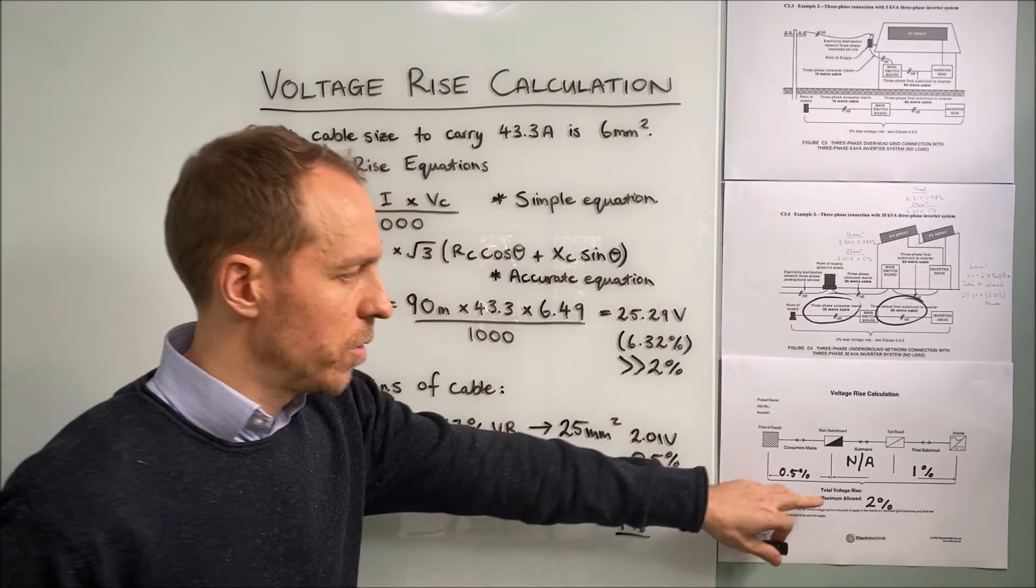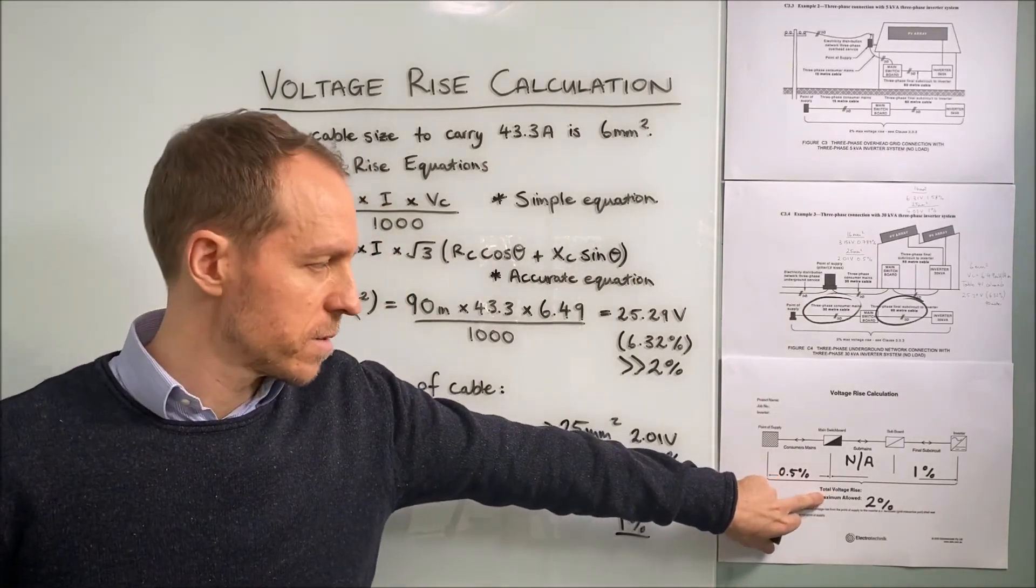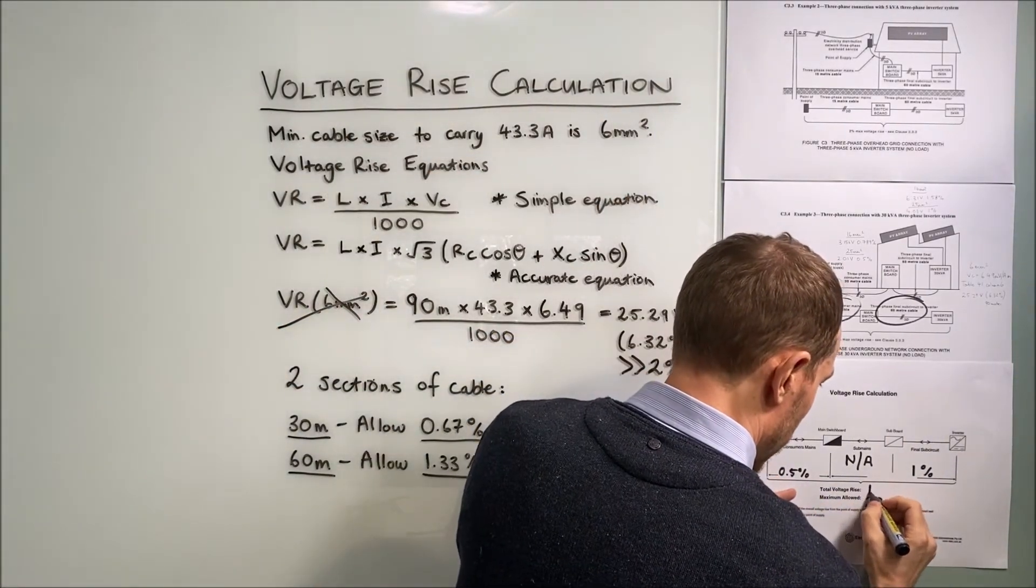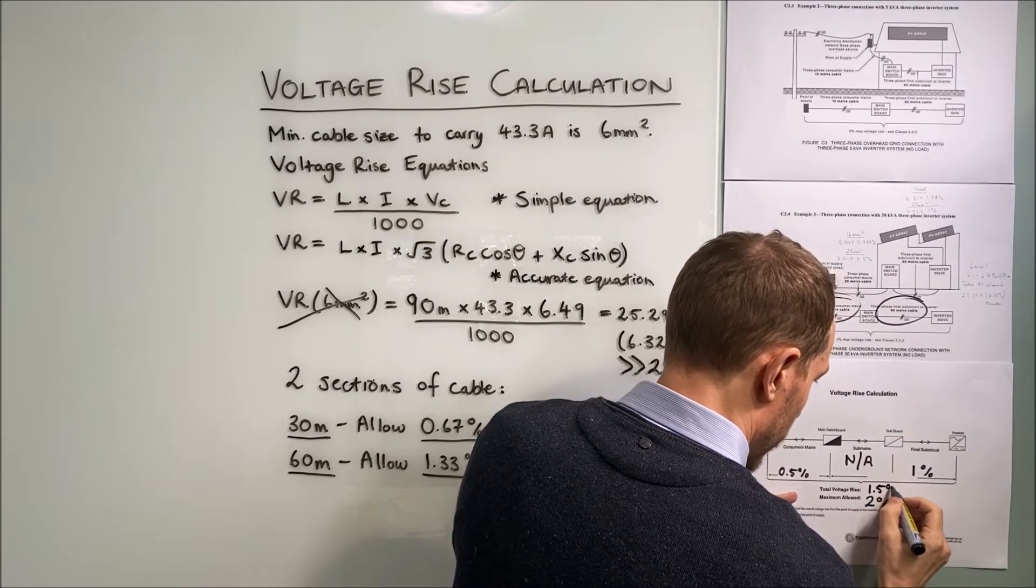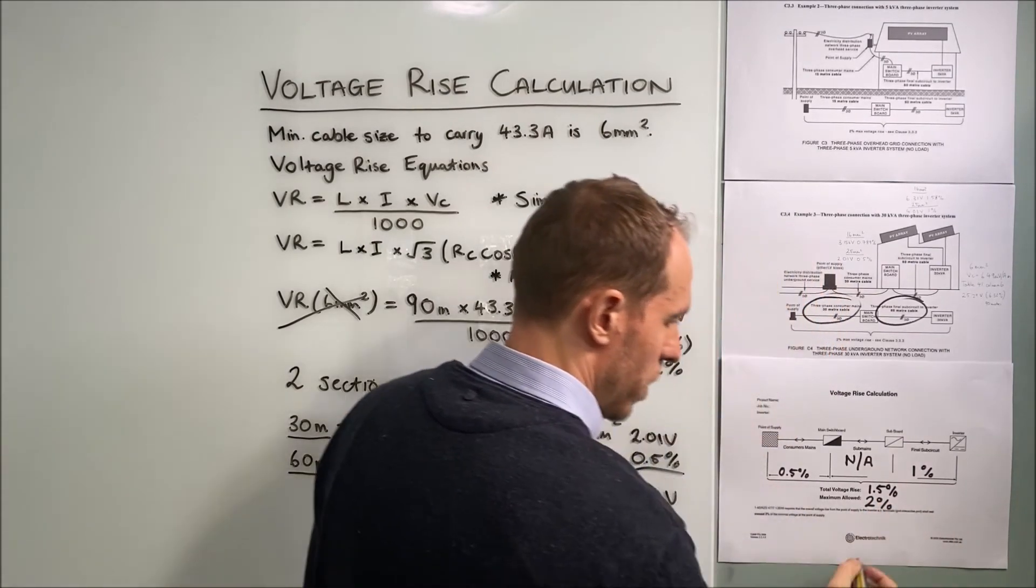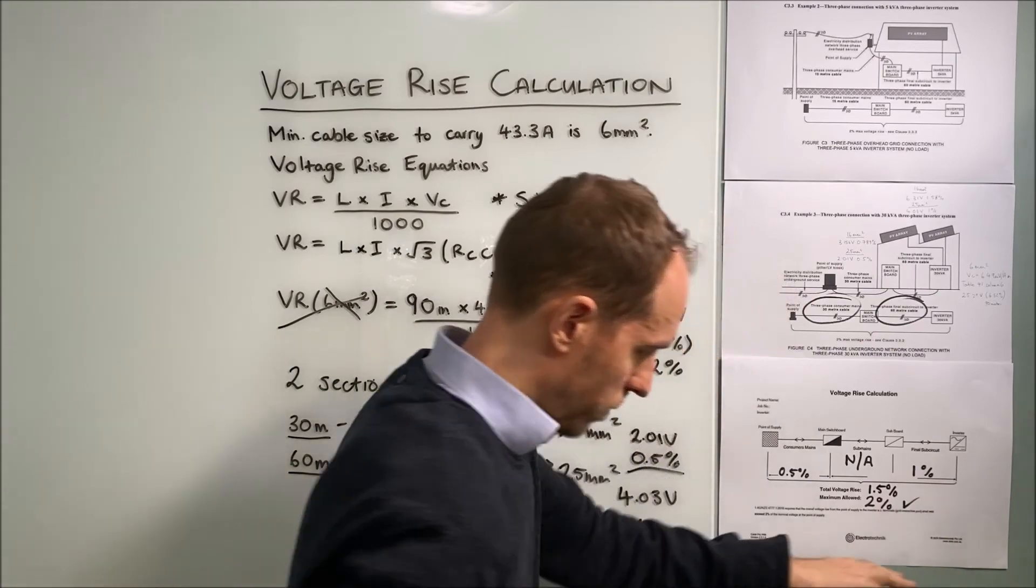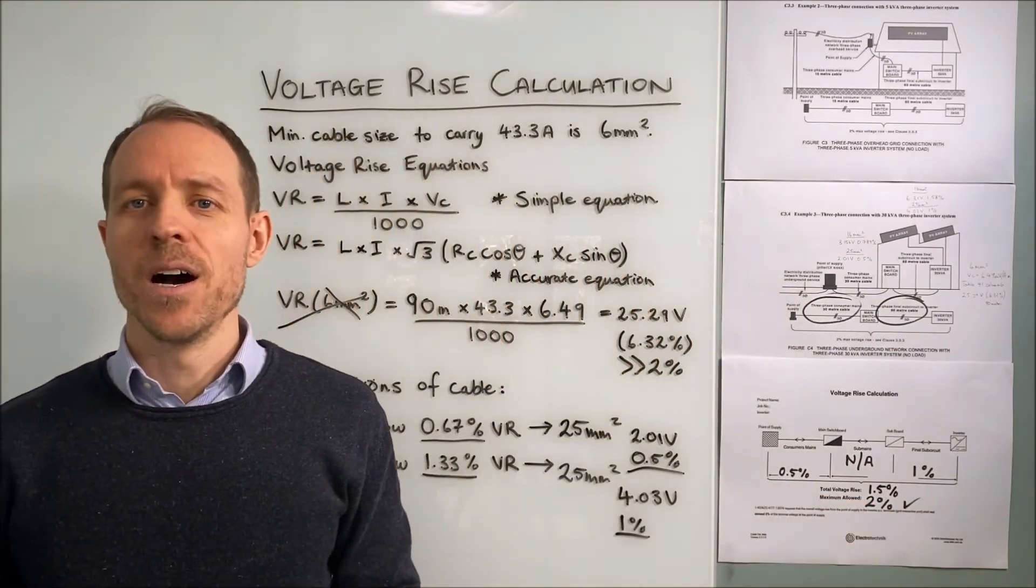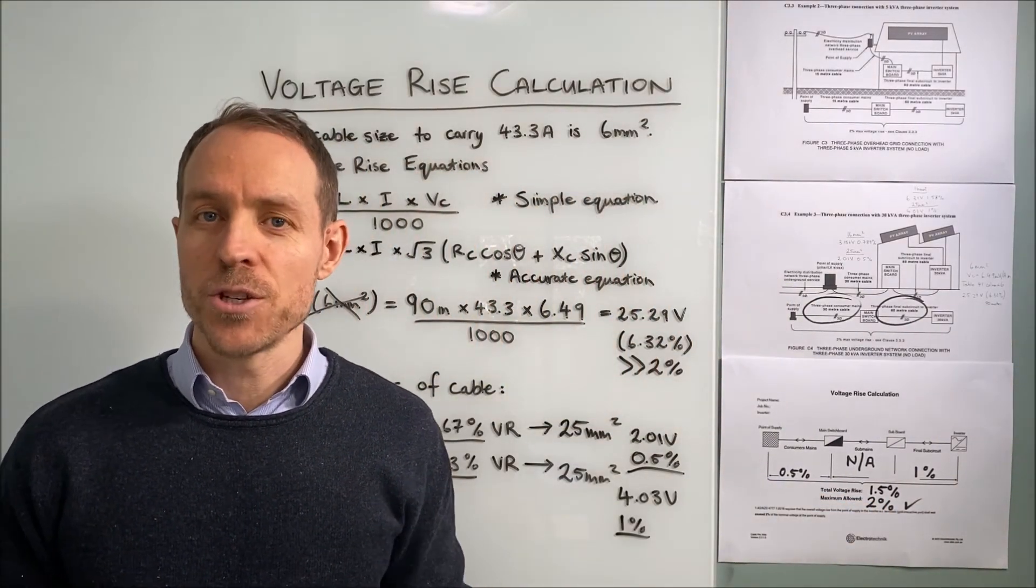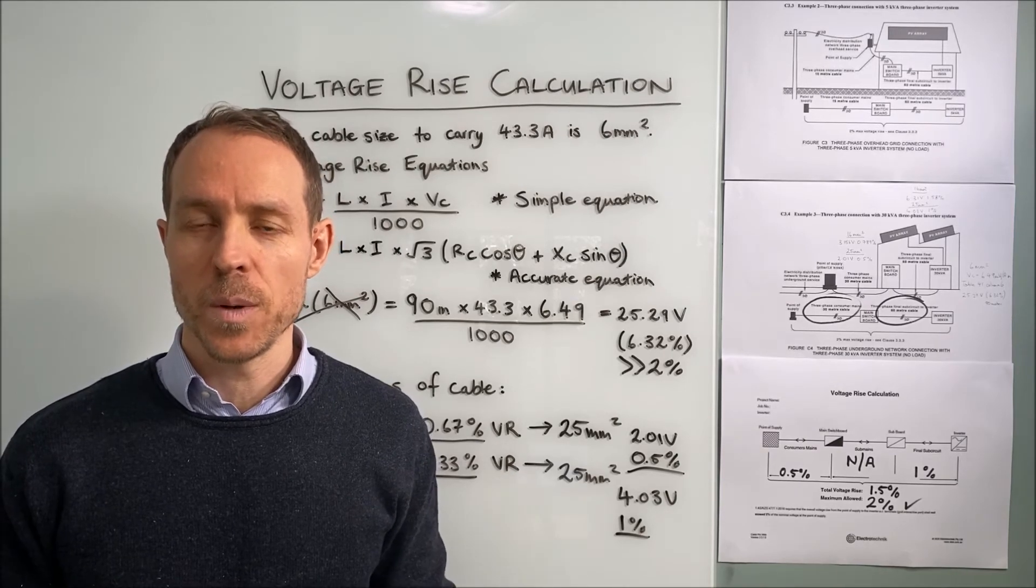And so, the total voltage rise could be shown as 1.5% overall, which meets our allowable limit. Next, I'm going to show you how to do the calculations using our software.